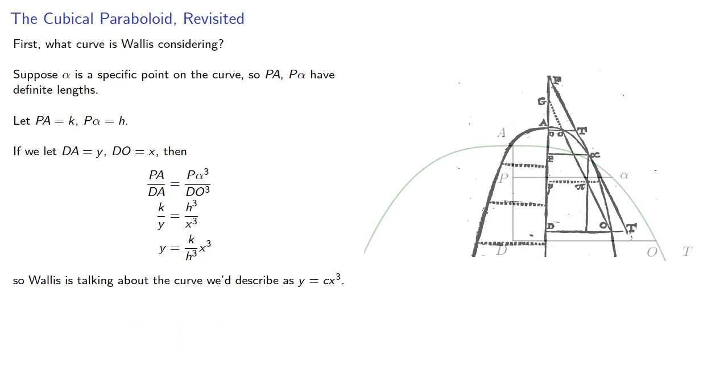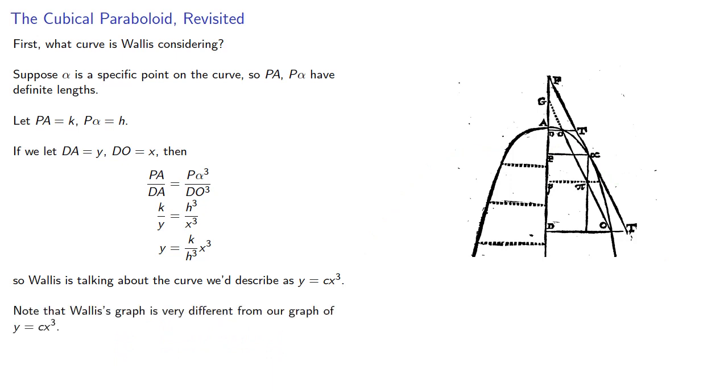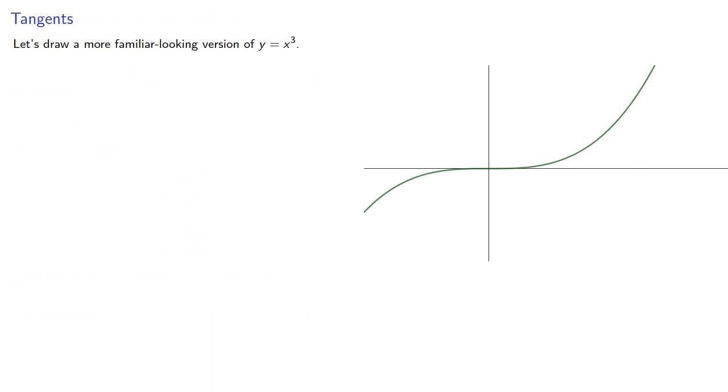Now remember, Wallace's graph looked like this. So that Wallace's graph is very different from our modern graph of Y equals CX cubed. So let's draw a more familiar version of Y equals X cubed, let alpha be the point of tangency, and extend the tangent line to F on the Y axis.